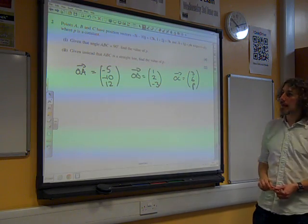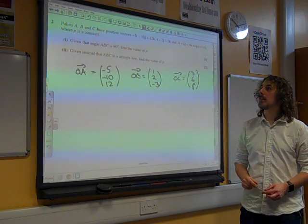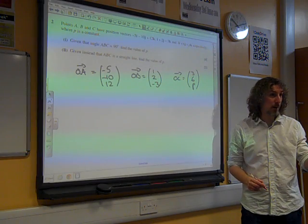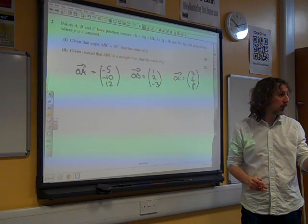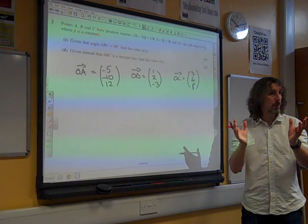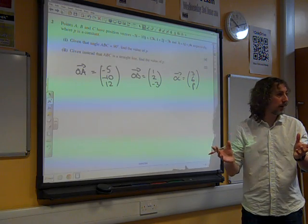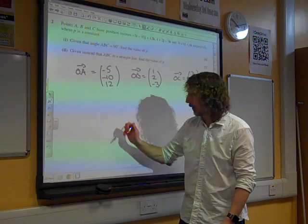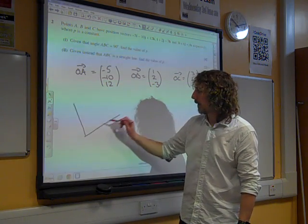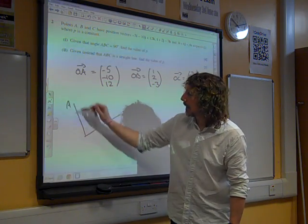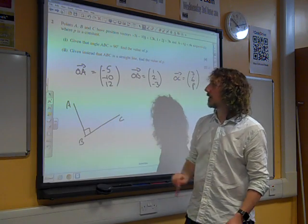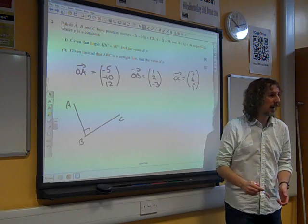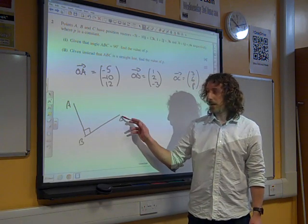Given that the angle A, B, C equals 90 degrees, find the value of P. Again, partly this is that same idea, isn't it, of making sure we understand what we're looking for when we do this stuff. So the angle A, B, C, I'm going to do a little diagram. The angle A, B, C is 90 degrees. That's what it means when we write it in that order. It's the angle A, B, C.